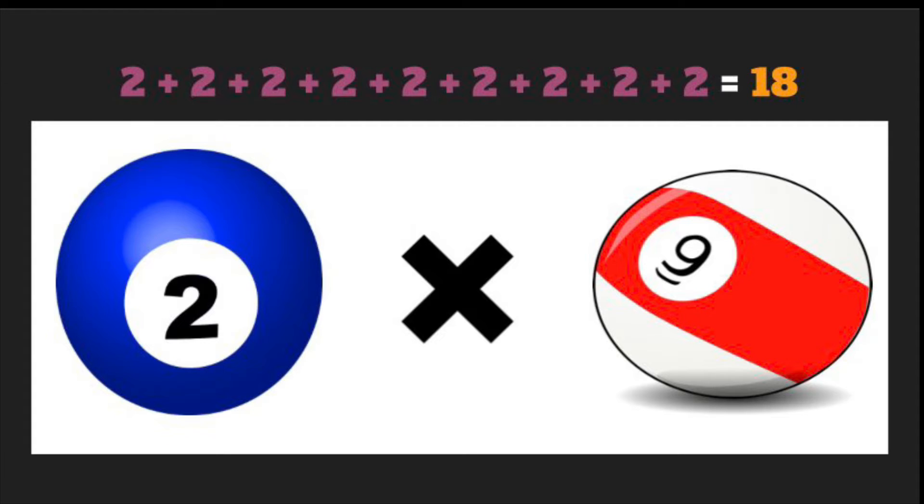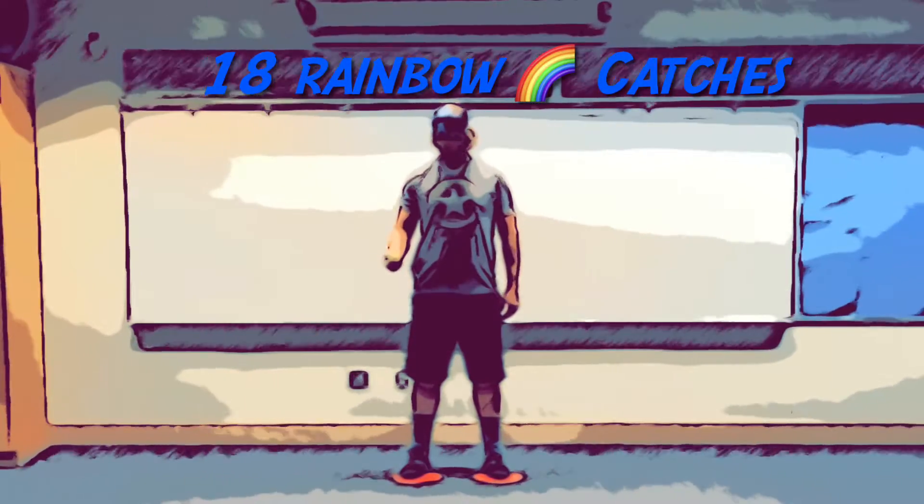2 times 9 equals... 1, 2, 3, 4, 5, 6, 7, 8, 9, 10, 11, 12, 13, 14, 15, 16, 17, 18.